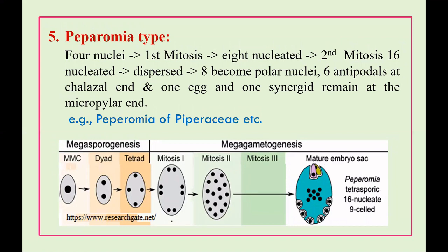The fifth type is peperomia-type, also a very interesting type of development. Like plumbago-type, the 4 nuclei move to each end. After the first mitosis they develop into 8 nuclei, and after the second mitosis into 16 nuclei. However, all 16 nuclei are dispersed throughout the cell — 8 become polar nuclei and 6 become antipodals.